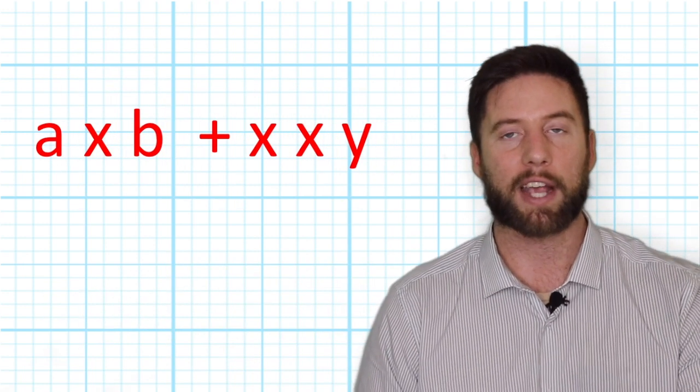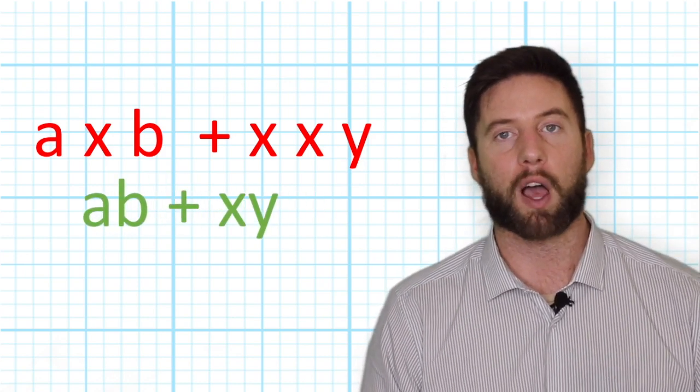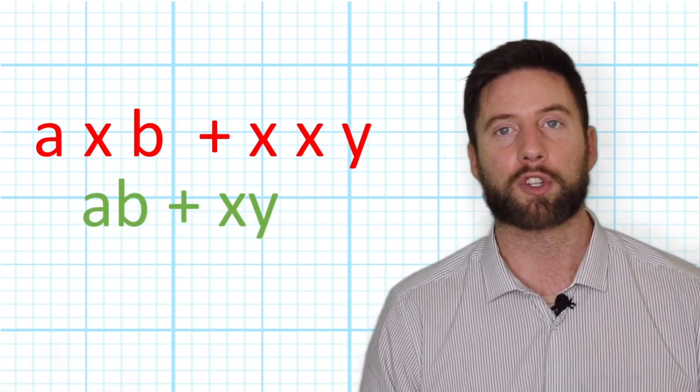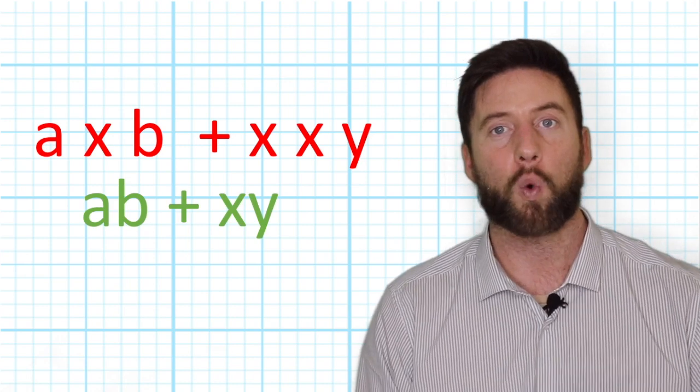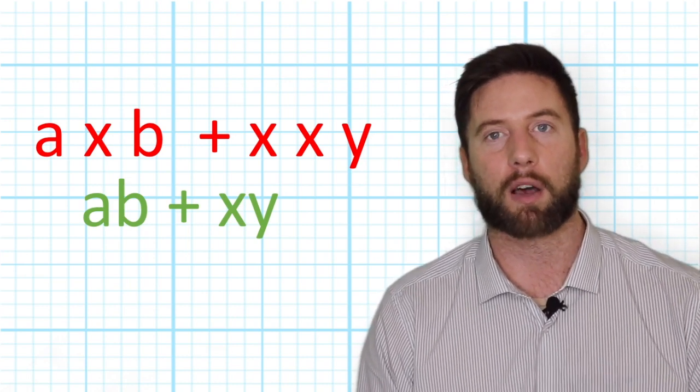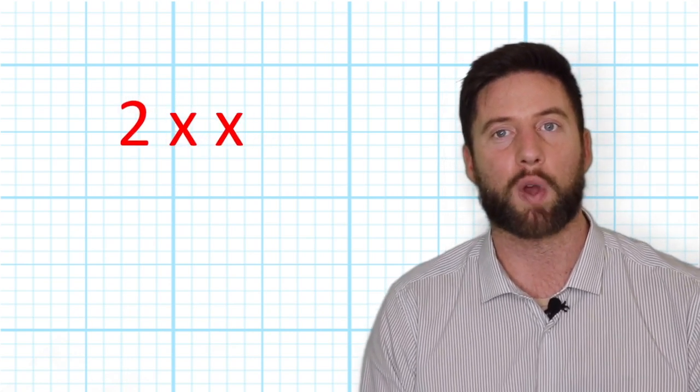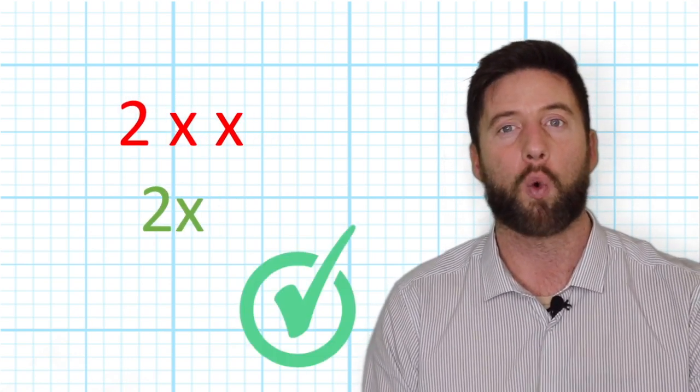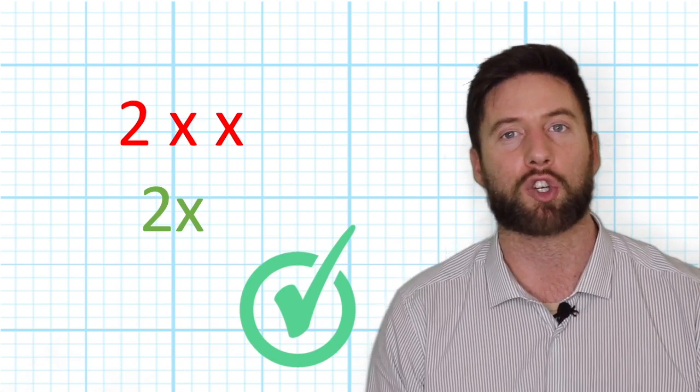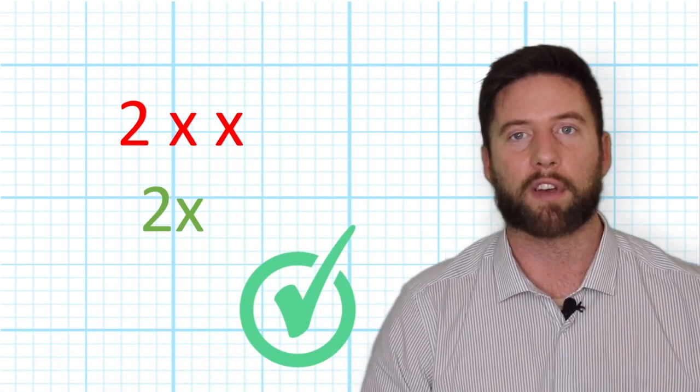we can have AB + XY. Now this rule doesn't just apply when it's two symbols. It is also implied when it's a quantity and a symbol. For example, we don't need to write 2 times X, we can just write 2X. Because there's no other operation between them, we imply and assume it is multiplication.